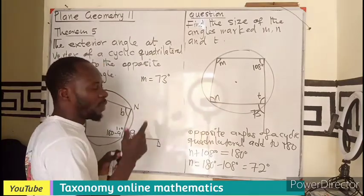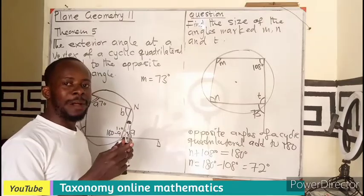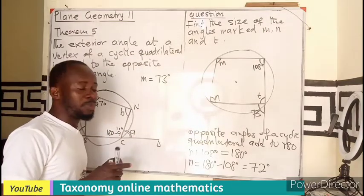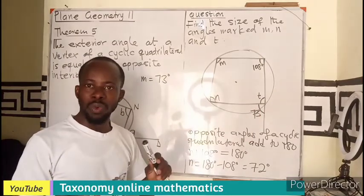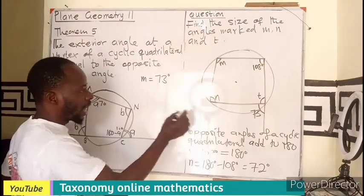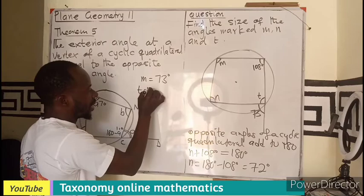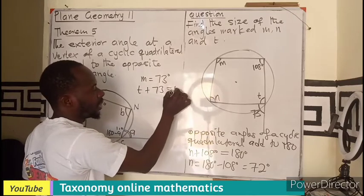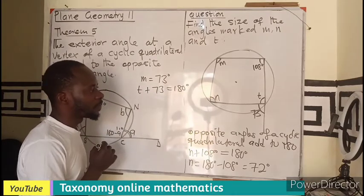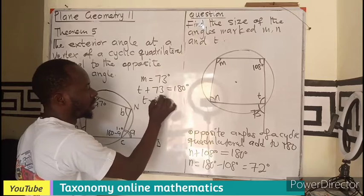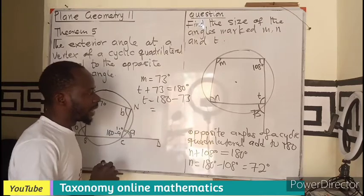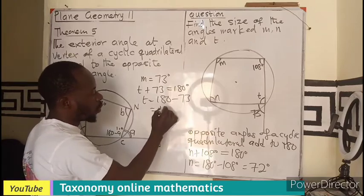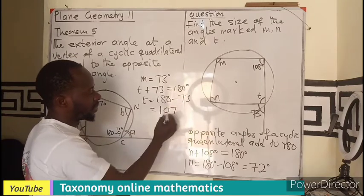Then right away borrowing the property from plane geometry which says that the adjacent angles on the straight line add up to 180, so I can have T plus 73 equals to 180 degrees. Then T is going to be 180 minus 73. And I believe that will give us 107 degrees.